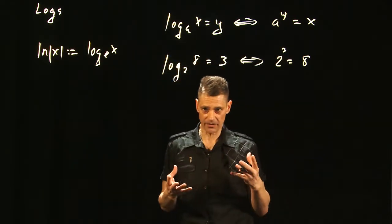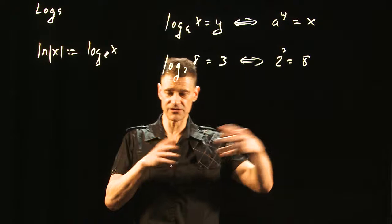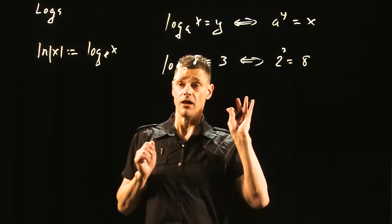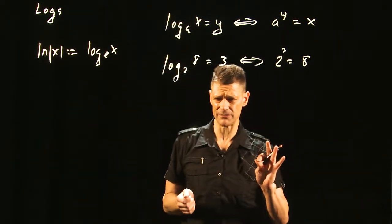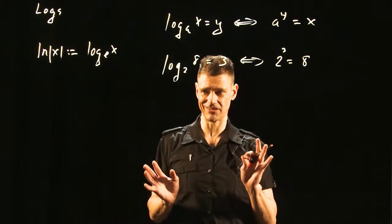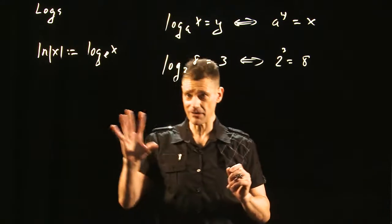E is this transcendental number, it's 2.7 and some change going on down the line. Like pi, it shows up just a whole bunch and it's really kind of cool and spooky.